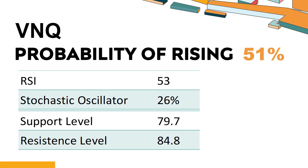Has VNQ experienced bullish or bearish technical momentum recently? DNQ's 14-Day Relative Strength Index (RSI) value was 53, indicating moderately bullish momentum as the price has been rising but has not yet reached overbought levels. The current stochastic oscillator of VNQ is 26%, indicating that the stock is experiencing a strong downtrend and strong selling pressure. An oversold signal may indicate that a stock is hitting a temporary bottom, but it doesn't necessarily mean that the trend will reverse immediately.